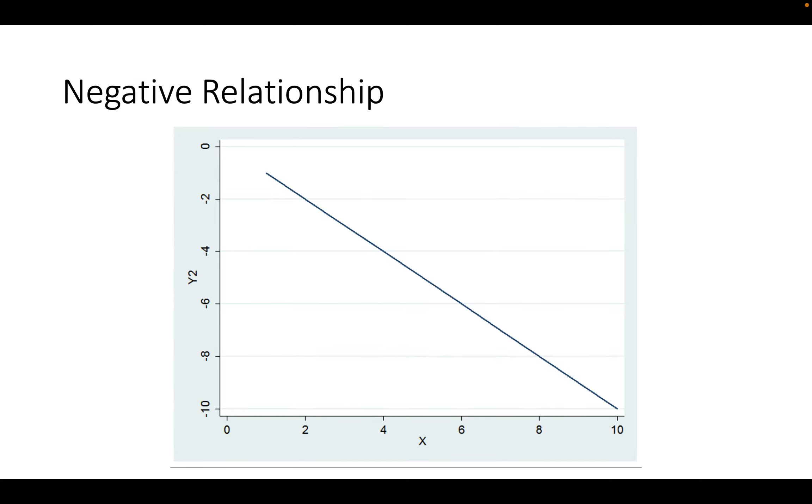A negative relationship would be the opposite, where the independent variable's values increase, the dependent variable values decrease. But that's not what we saw in that GDP per capita and net migration relationship.